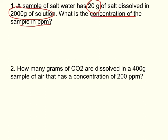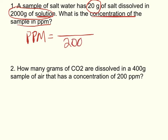PPM is your buzzword — that tells you to use the equation: PPM equals mass of solute divided by mass of solution. Now I have to figure out which is the solute and which is the solution. Your solute is what you have less of, so look for the smaller number. Also, the keyword 'solution' tells you that 2,000 grams goes on the bottom.